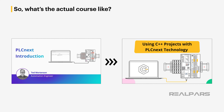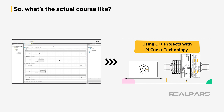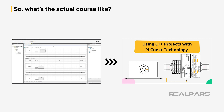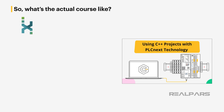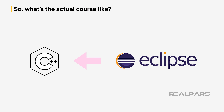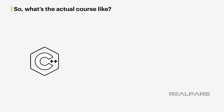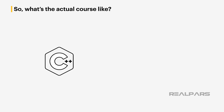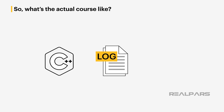This second course continues from the first course. Students will have completed and successfully tested a ladder logic coded project specified in the first course. Students who have not completed the first course will be provided with the coded project program at the beginning of the course. Students will use the editor Eclipse to create C++ programs, along with the PLCnext Eclipse plugin to develop projects. This course will have students writing a C++ program based on the first course project, which will provide logging data for several project operations.